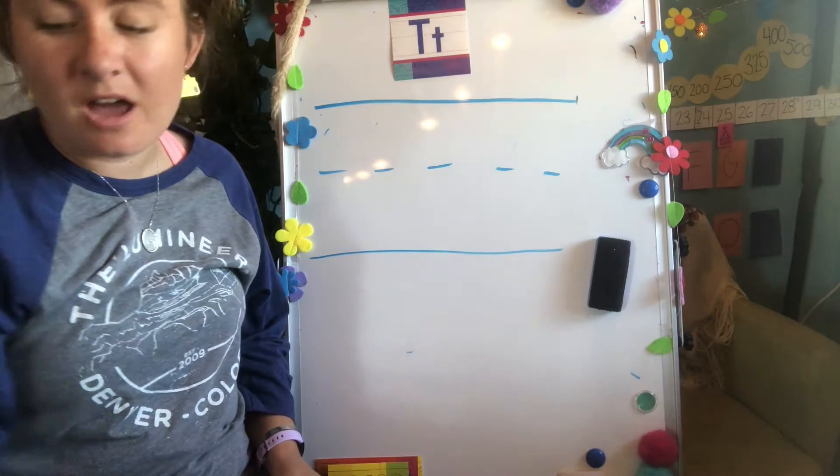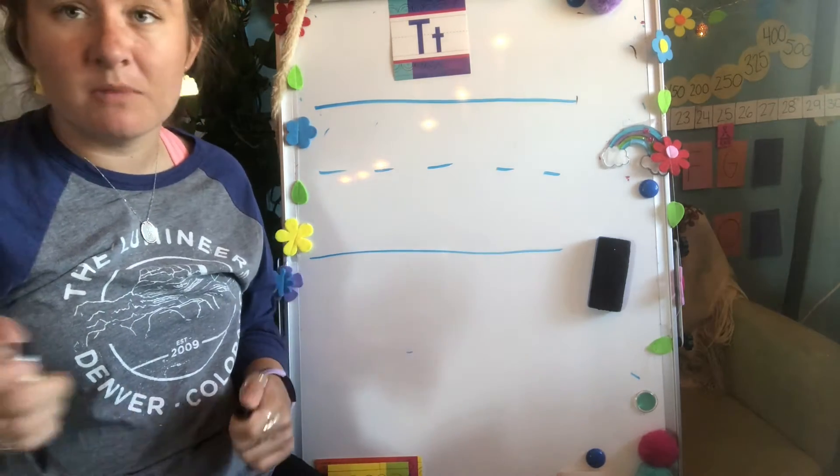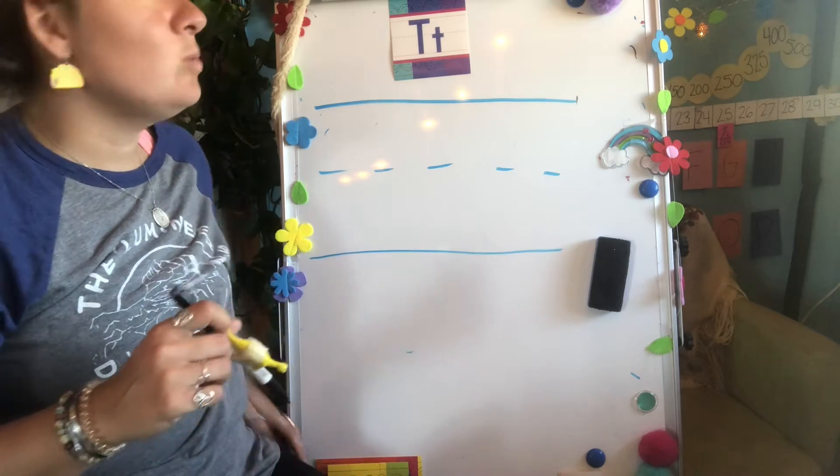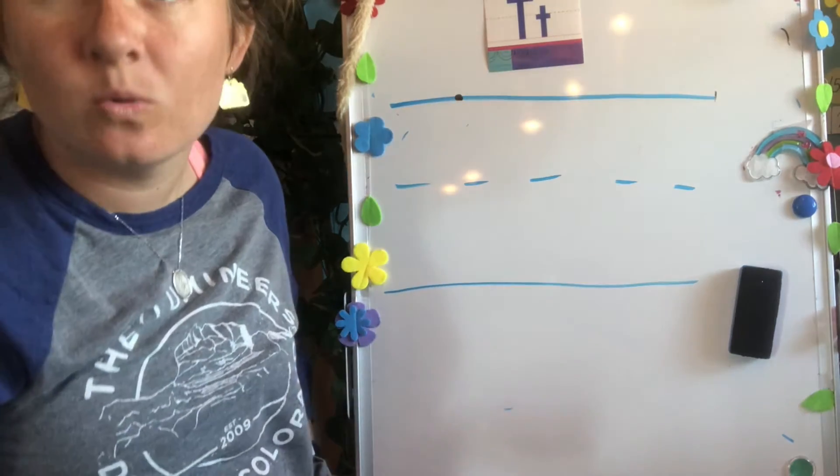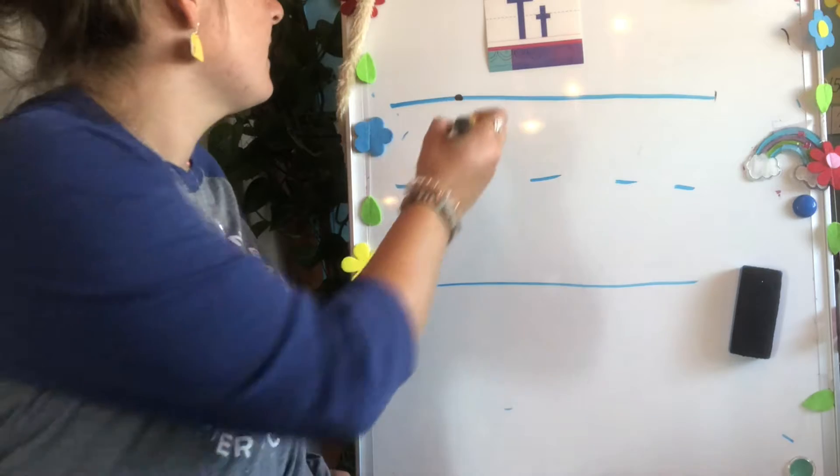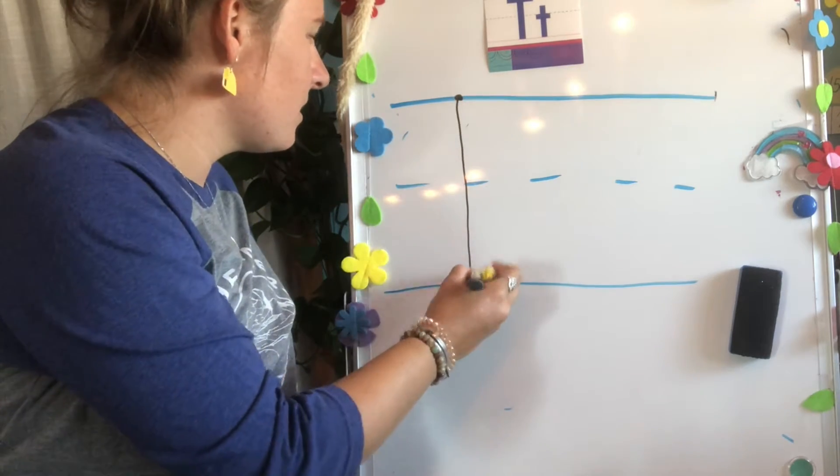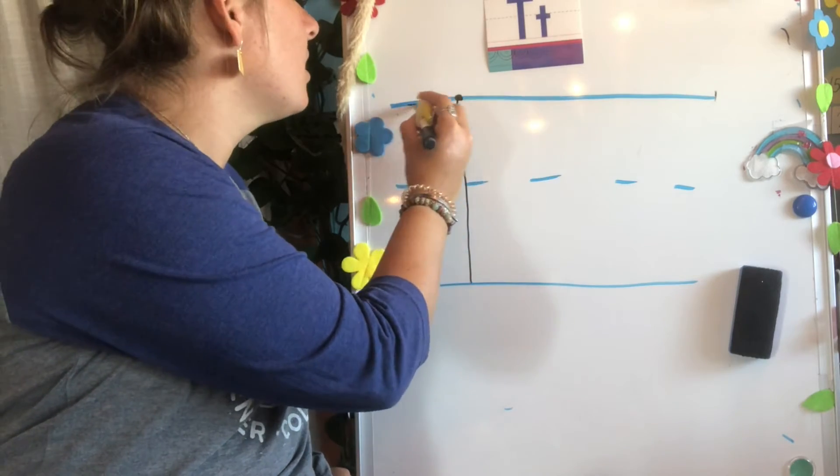All right, first let's draw an uppercase T. So go ahead and get your crayon or marker or pencil or pen. And we are going to start at the top line. So I'm going to draw my dot there so I know where to start. All you do is draw a line down. And then you go across on this top line. Across.